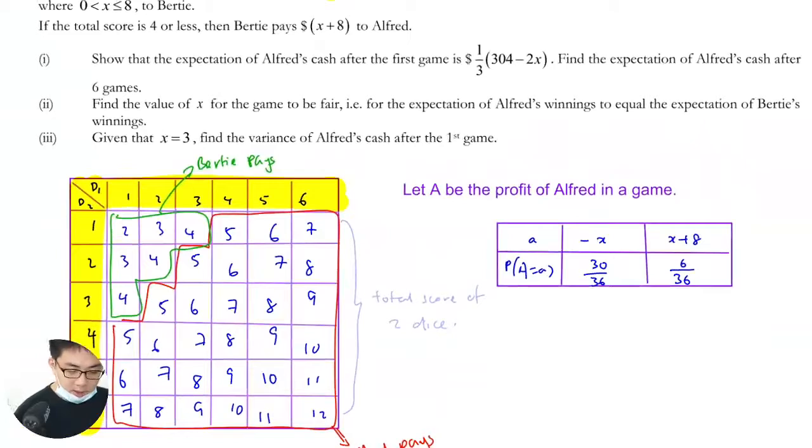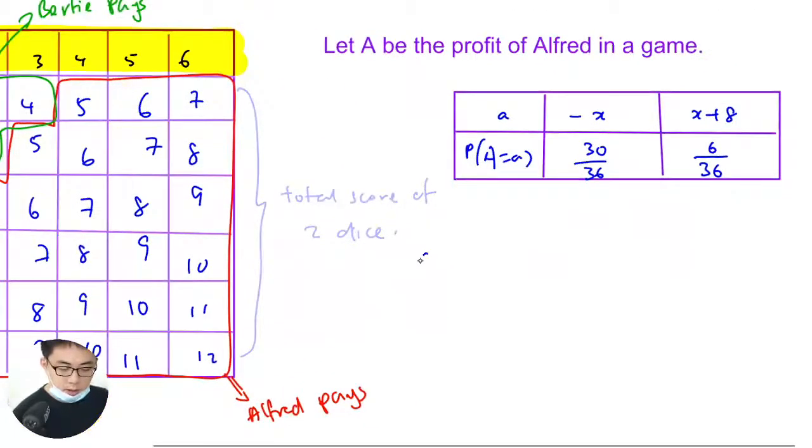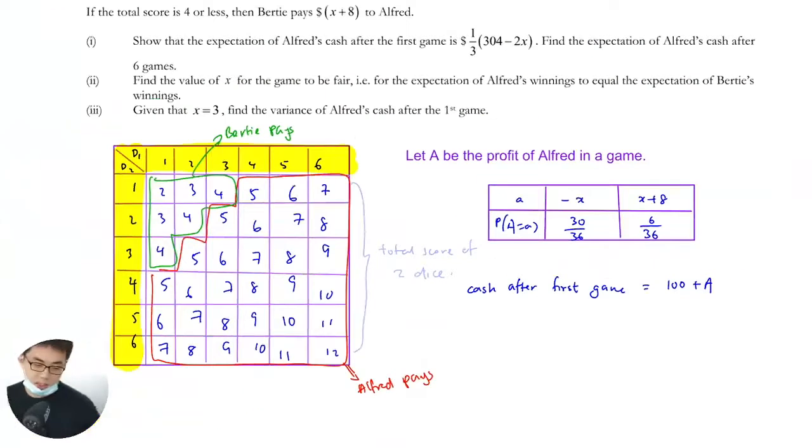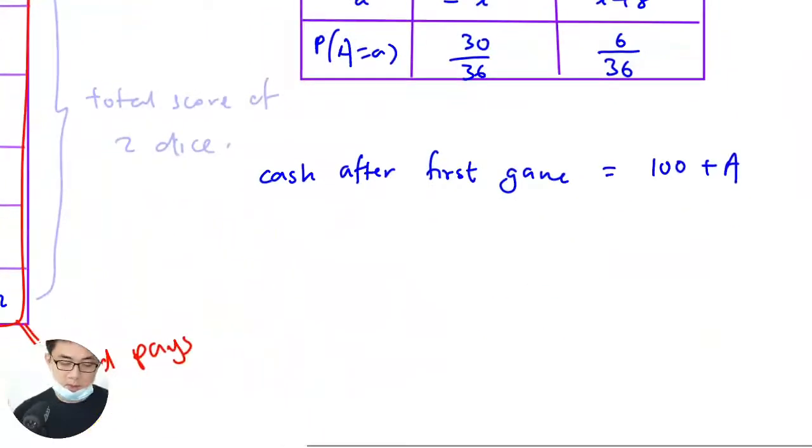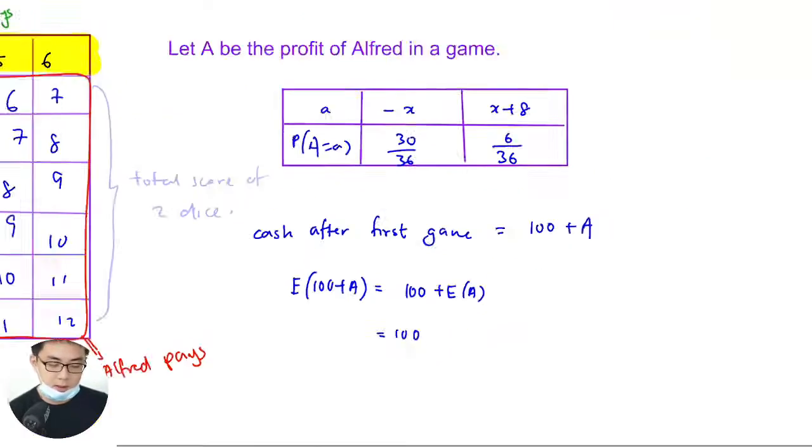Show that expectation of cash after the first game is this one. Cash after first game is 100 plus A. Start with a hundred dollars. So expectation of cash after the first game would just be 100 plus E(A).